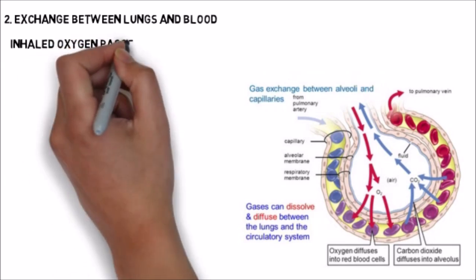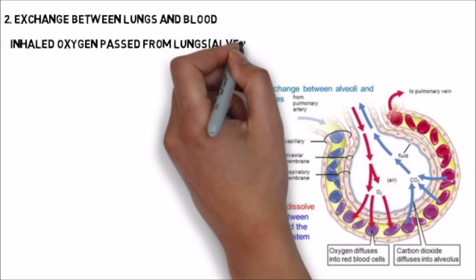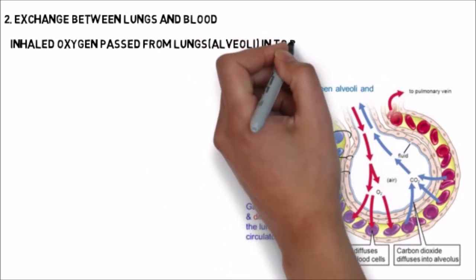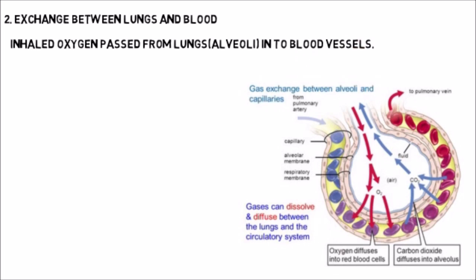In the second step, the inhaled oxygen goes from the lung into blood vessels, and similarly, the carbon dioxide from blood vessels goes into the lungs. So the second step is the exchange between lungs and blood — oxygen moves from lungs into blood, and carbon dioxide moves from blood into lungs.